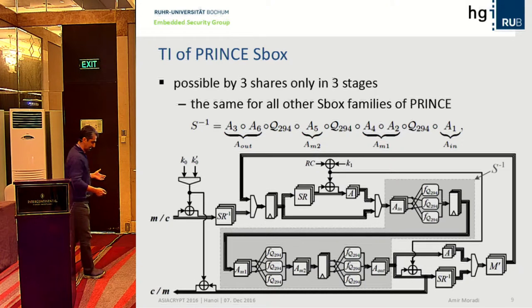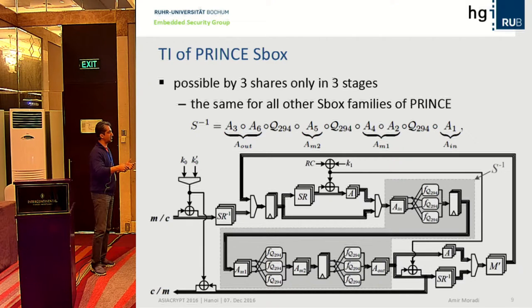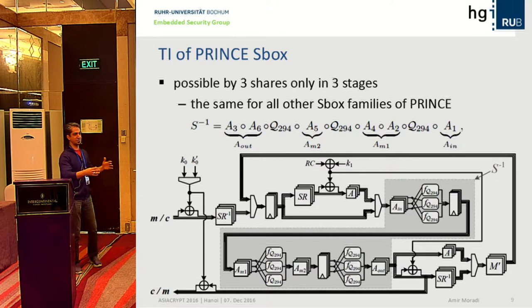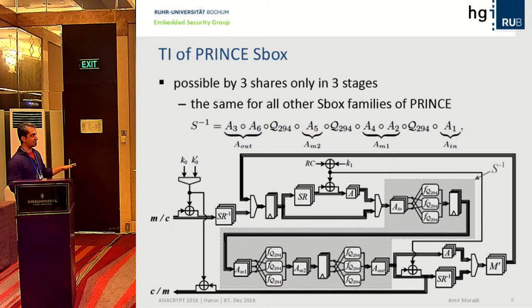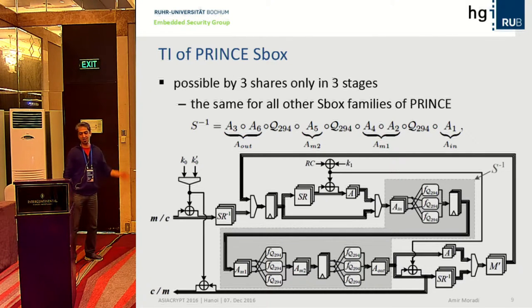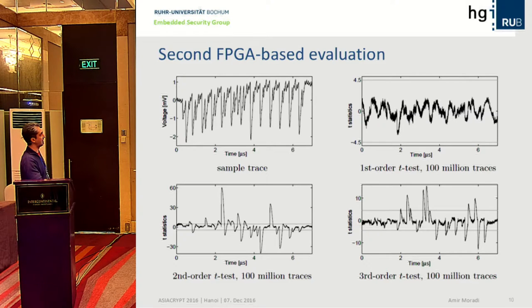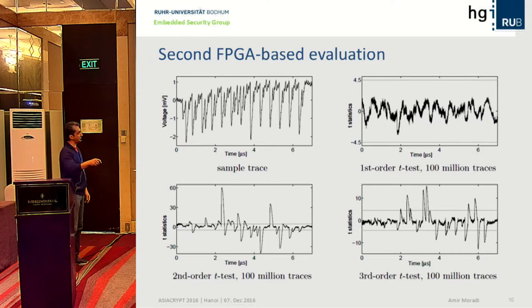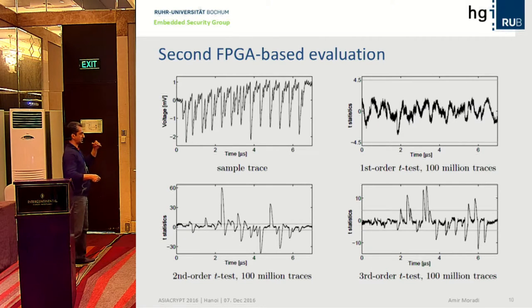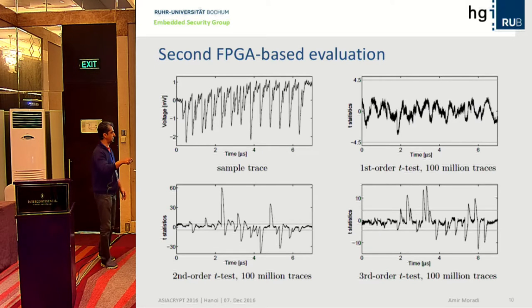With three stages and three registers, latency is directly affected. If PRINCE needs 10 clock cycles, the TI version needs 10 times 3 cycles. All S-box families suggested for PRINCE unfortunately require three-stage decomposition — there is no difference switching between them. When measured on FPGA running at 3 MHz, the T-test with 100 million traces shows no first-order leakage, as expected for a first-order secure implementation. Second-order and third-order leakage are detectable, which is expected.